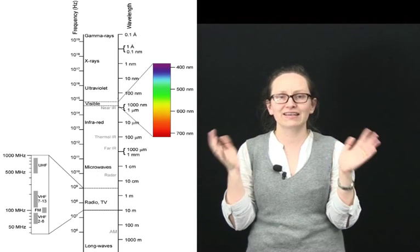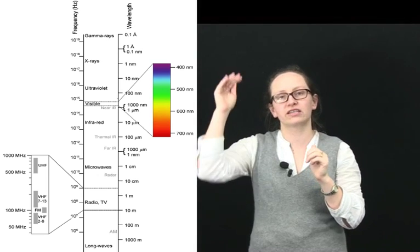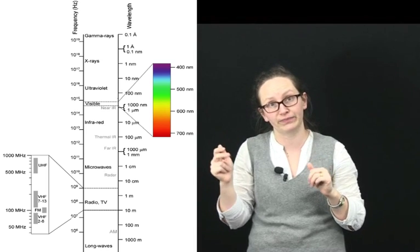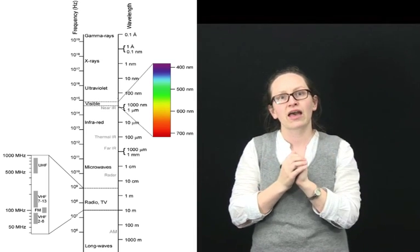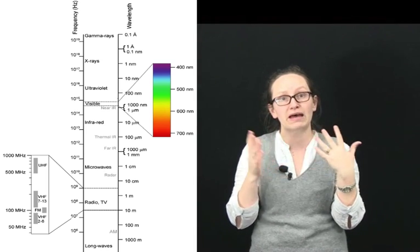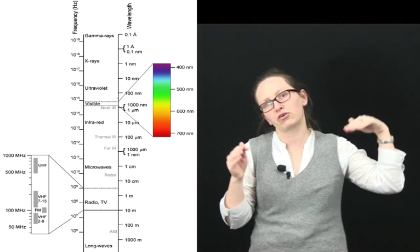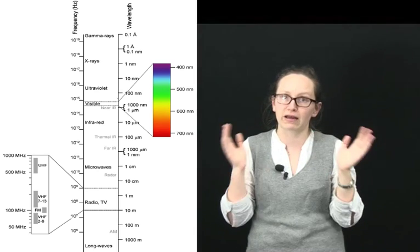So this image shows you the different parts of the electromagnetic spectrum. Speed cameras use a wavelength of about three centimeters, so this falls just into the radio wavelength.